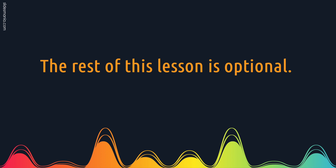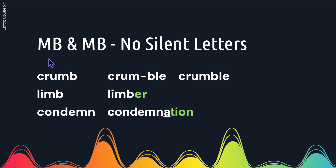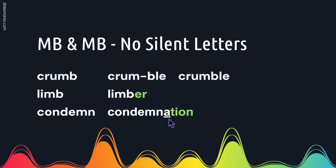The rest of this lesson is optional. If you have M-B at the end of a root word, the B is silent, like in the word crumb. But sometimes the B will take on a sound when you add other letters in a suffix, like crumble. Here we have limb with a silent B, but we add the suffix -er and it becomes limber. Here we have condemn with a silent N, but when we add the suffix -ation, it becomes condemnation where the N sound is clearly heard.